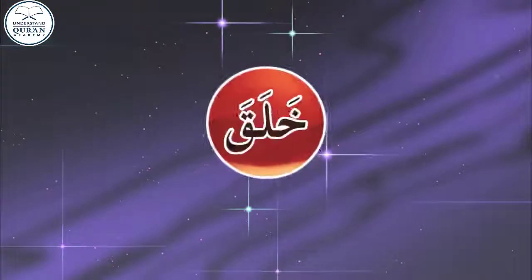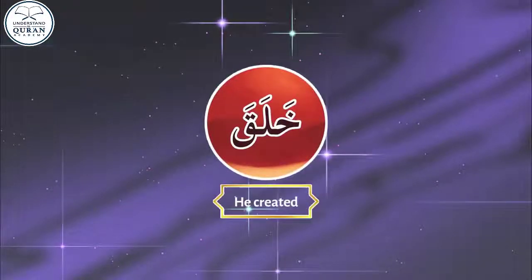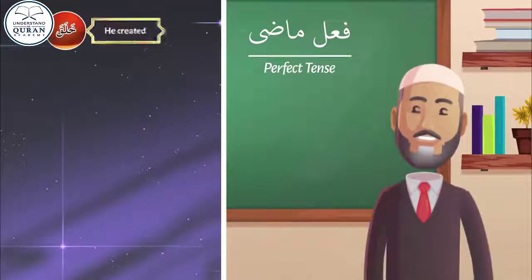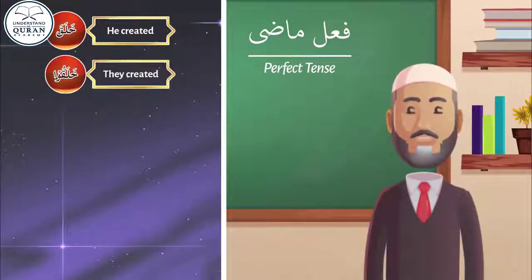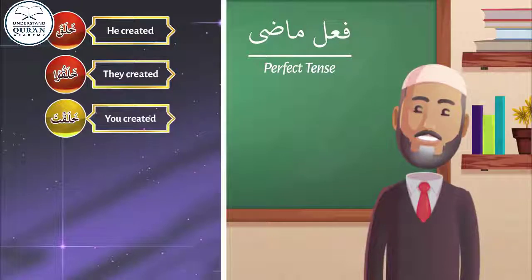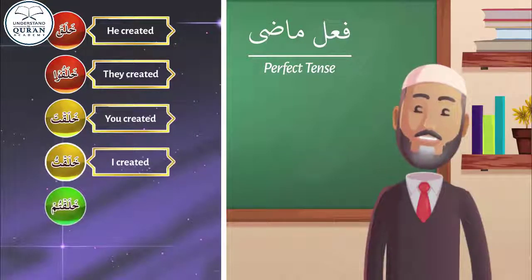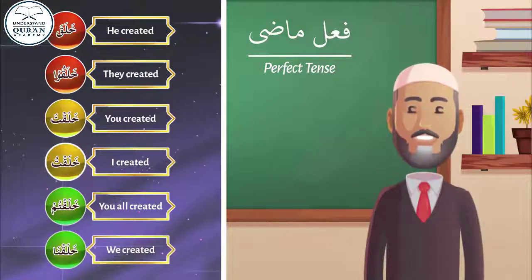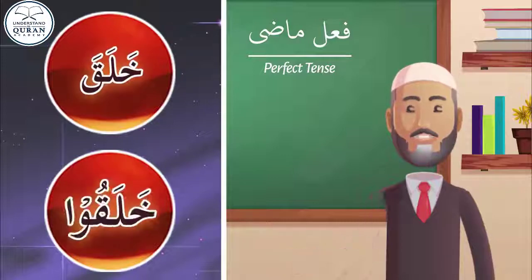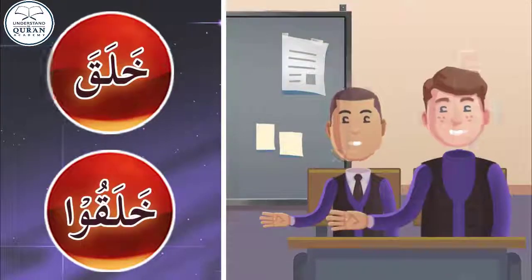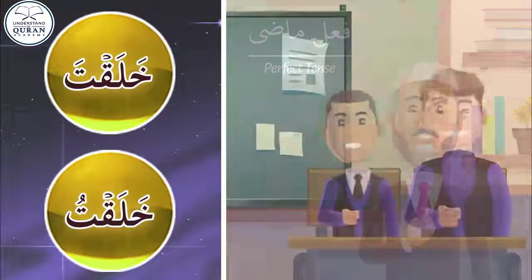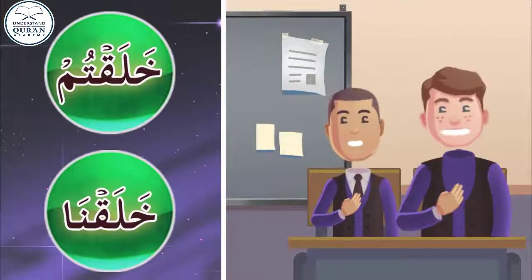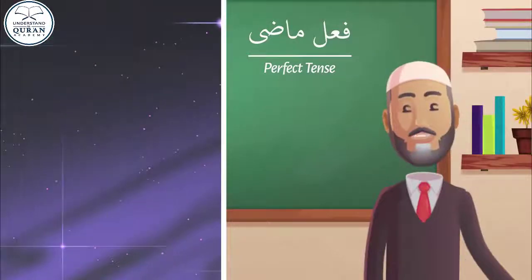Let's take another verb: Khalaqa. Khalaqa means 'he created.' Can you translate with TPI? Khalaqa — he created. Khalqu — they created. Khalaqta — you created. Khalaqtu — I created. Khalaqtum — you all created. Khalaqna — we created. Can you repeat after me in Arabic? Khalaqa, Khalqu, Khalaqta, Khalaqtu, Khalaqtum, Khalaqna. Masha Allah.